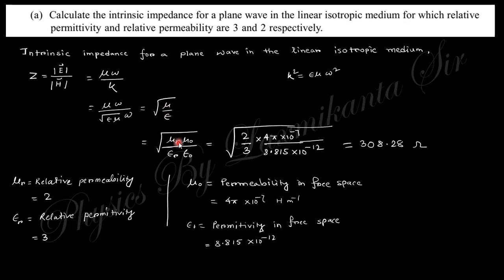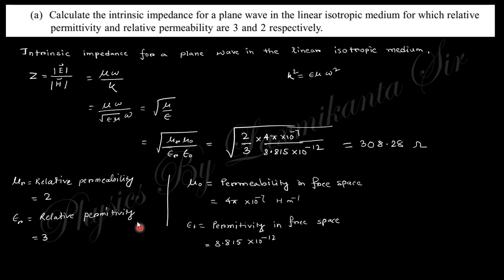You know μr = μ/μ₀, so μ = μr·μ₀ and ε = εr·ε₀. Putting μr = 2, εr = 3, μ₀ = 4π × 10⁻⁷, and ε₀ = 8.854 × 10⁻¹², and entering these values in your calculator, you will obtain the impedance value. I think that is clear about this answer. If there is any doubt, please comment in the comment box.